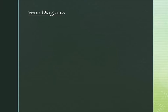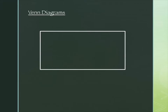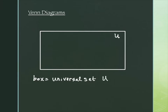Venn diagrams start out by looking like a rectangle. The rectangle itself — this box — is the universal set U. So U could be something infinite, like all the natural numbers, or it could be just a collection of things like the numbers from 1 to 10. It can be literally anything; it doesn't have to be numbers. This U could be our class — all the people in our class would be in this rectangle, metaphorically speaking.